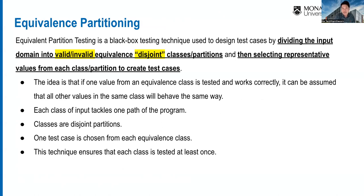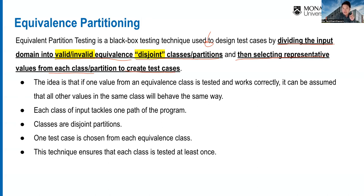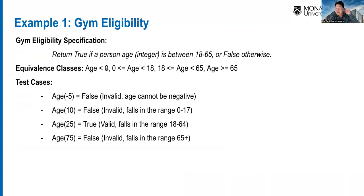The second technique is equivalence partitioning. The goal is to decide test cases by dividing the input domain into valid and invalid equivalent classes or partitions, then select representative values from each to create test cases. This is how we create diverse test scenarios — we decide one test case based on each class.